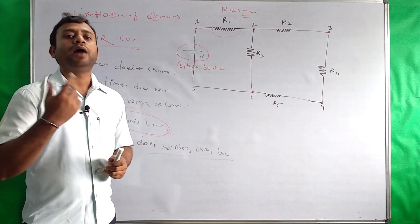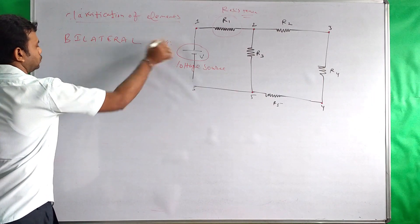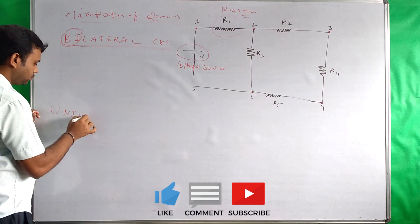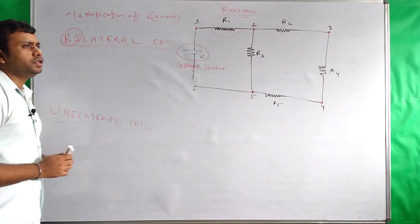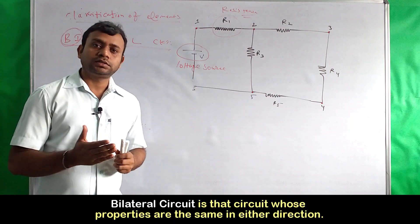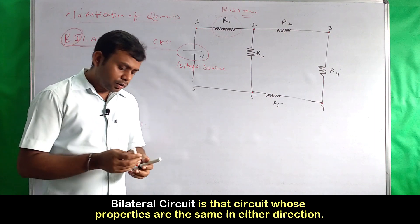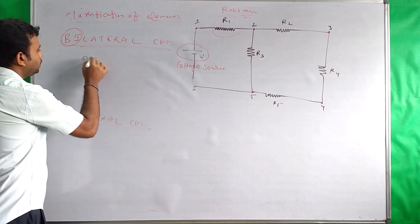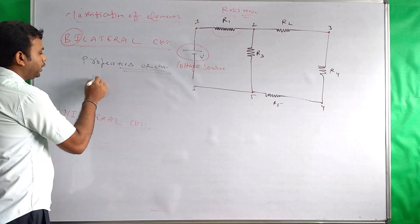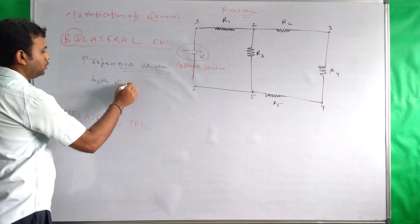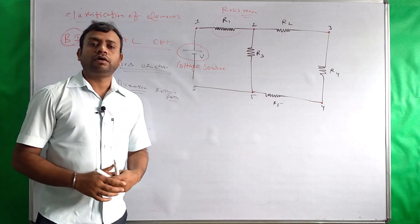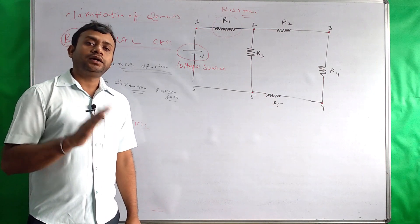Ab aage dekhte hain regarding the unilateral and bilateral circuit. Yeh bilateral kya hota hai? Jo bhi hamara bilateral circuit hota hai, uski jo bhi properties aur characteristics hoti hain, woh both directions mein same rehti hain. Properties aur characteristics jo bilateral circuits ki hoti hain, woh either direction mein same hoti hain.